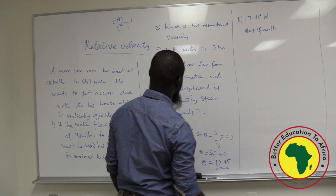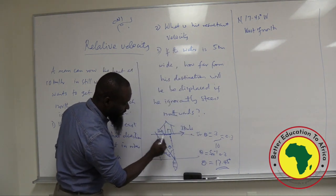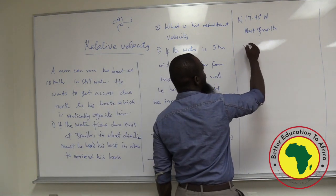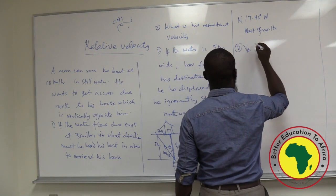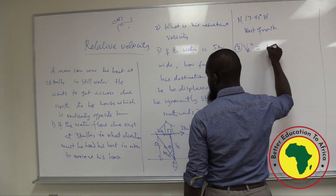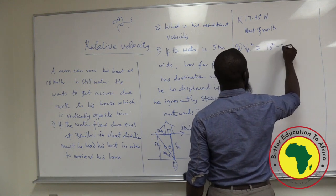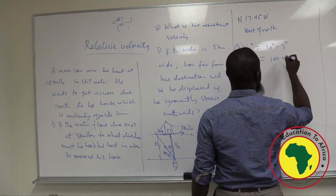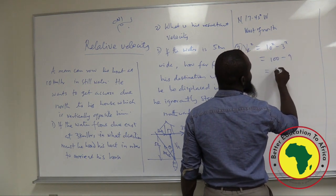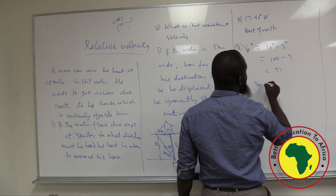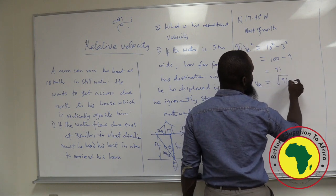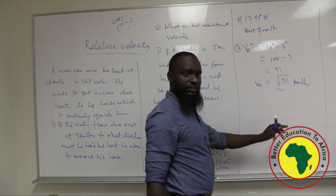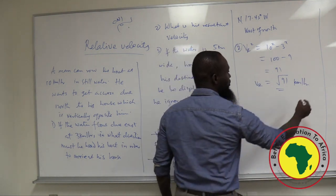The second question is what is his resultant velocity? His resultant velocity VR equals the square root of 10 squared minus 3 squared, which equals the square root of 100 minus 9 equals the square root of 91 kilometers per hour. The direction is north.